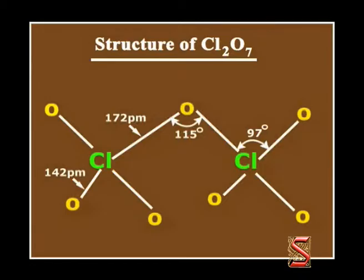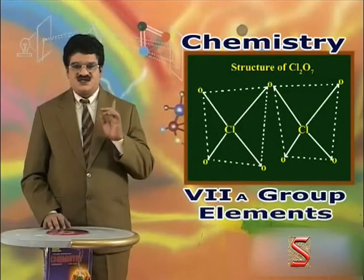The Cl2O7 molecule consists of two ClO3 units linked by an oxygen atom. Each ClO3 unit is tetrahedrally linked to 4 oxygen atoms. The structure can be seen in the figure.